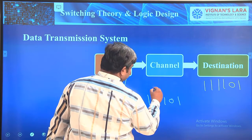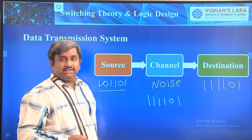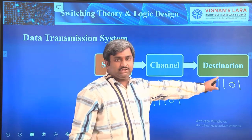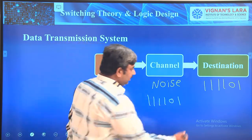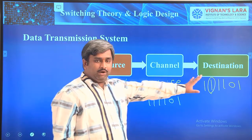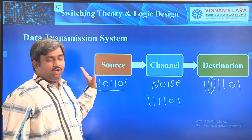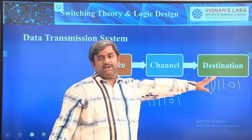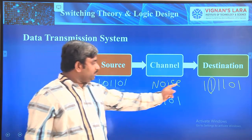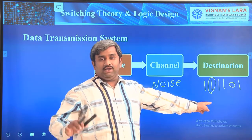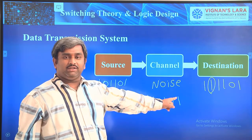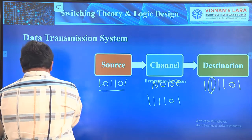Due to the disturbance of this channel, noise may change this information. Now this information is received at the destination with some error. In real time, one person is at the destination side and another person is at the source side. When the information is transferred, it will be transmitted as wrong information. Now you have to identify the error — finding the error is called error detection. If any methodology explains the process of error detection, that is called an error detection system. If any system is there to correct the error, that is called an error correction system.